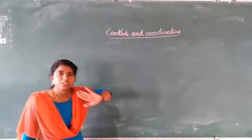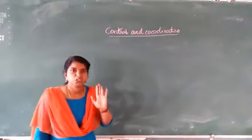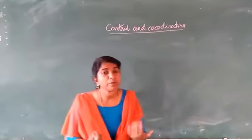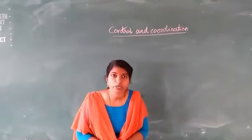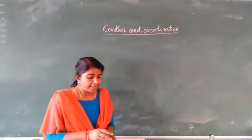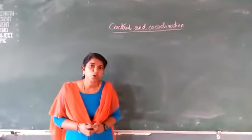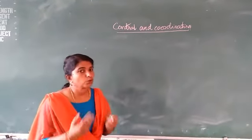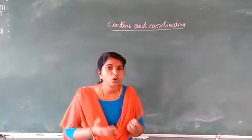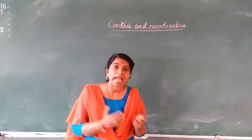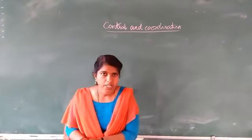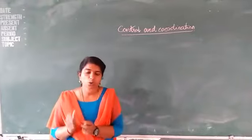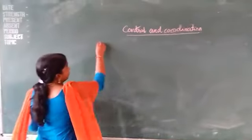Control and coordination is very urgent, and moreover we are complex organisms — we are not simple organisms. So here we have a well-developed coordinating system, and in our case there are two coordinating systems: neural coordination and hormonal coordination. First we can study about neural coordination — the nervous system.